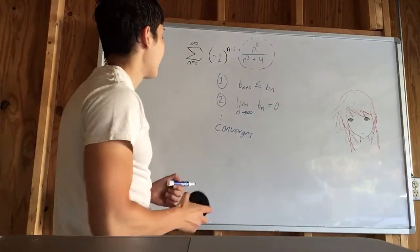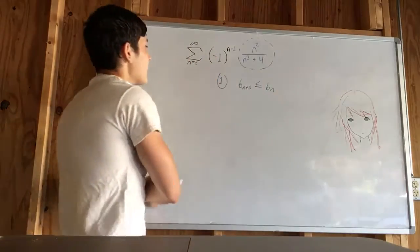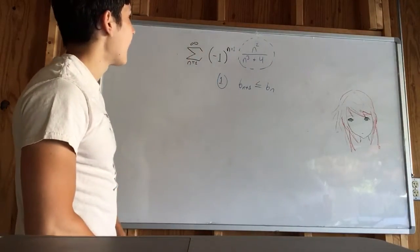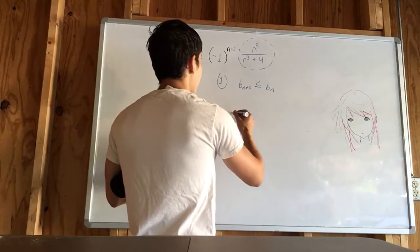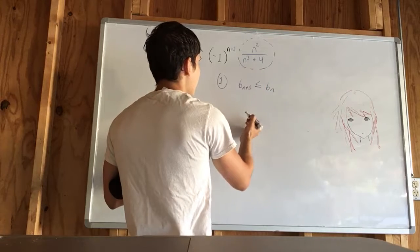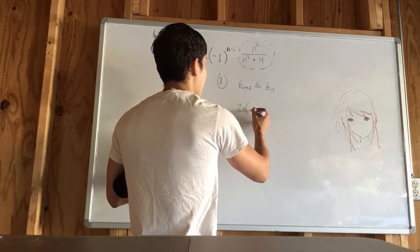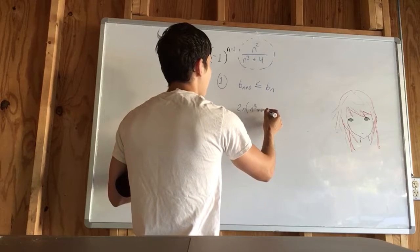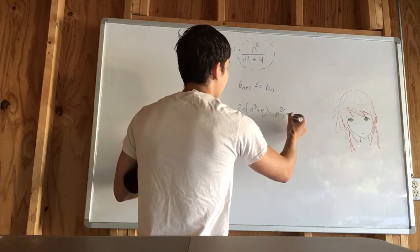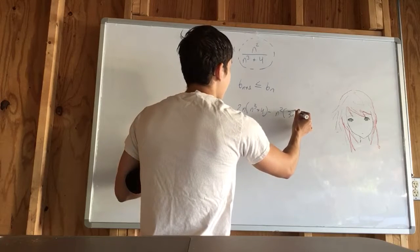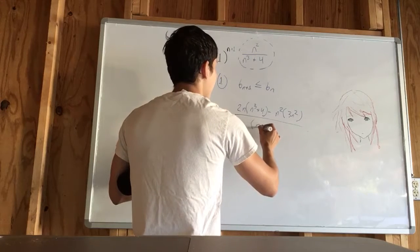So now let's go ahead and do our first trial. So this, you could either plug in n plus 1 or you could differentiate. I'm going to differentiate. So if we differentiate a quotient, we have to use the quotient rule. So this would be the derivative of the top times the bottom unchanged minus the top unchanged and the derivative of the bottom, which is 3n squared. And then the bottom is just squared.